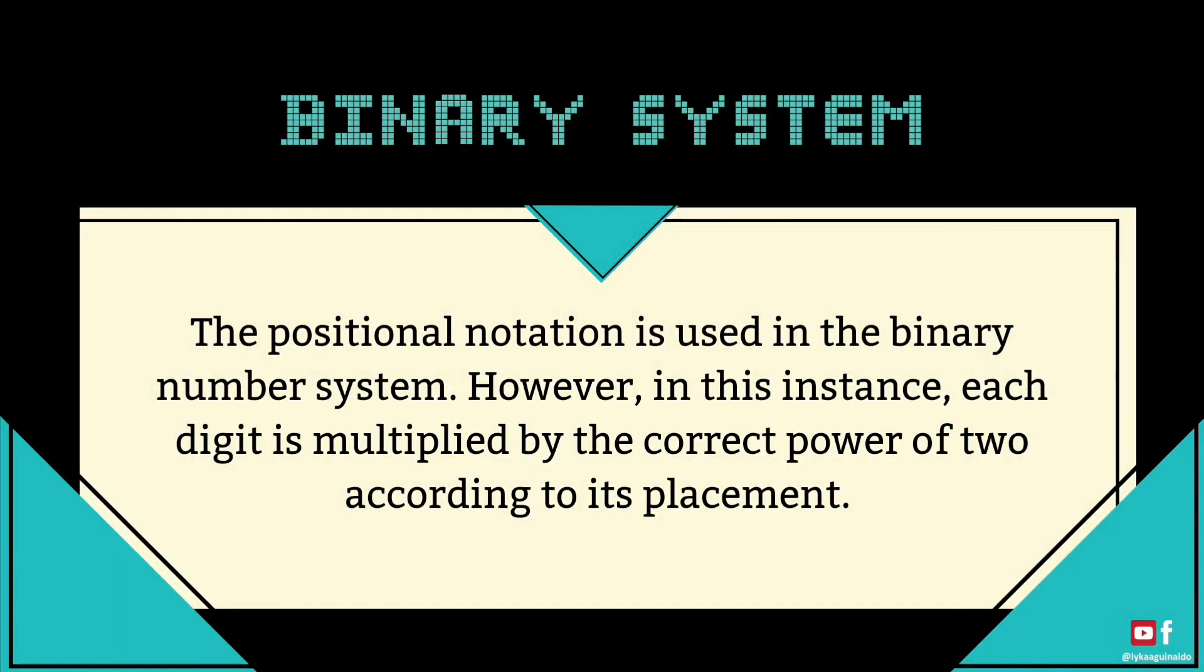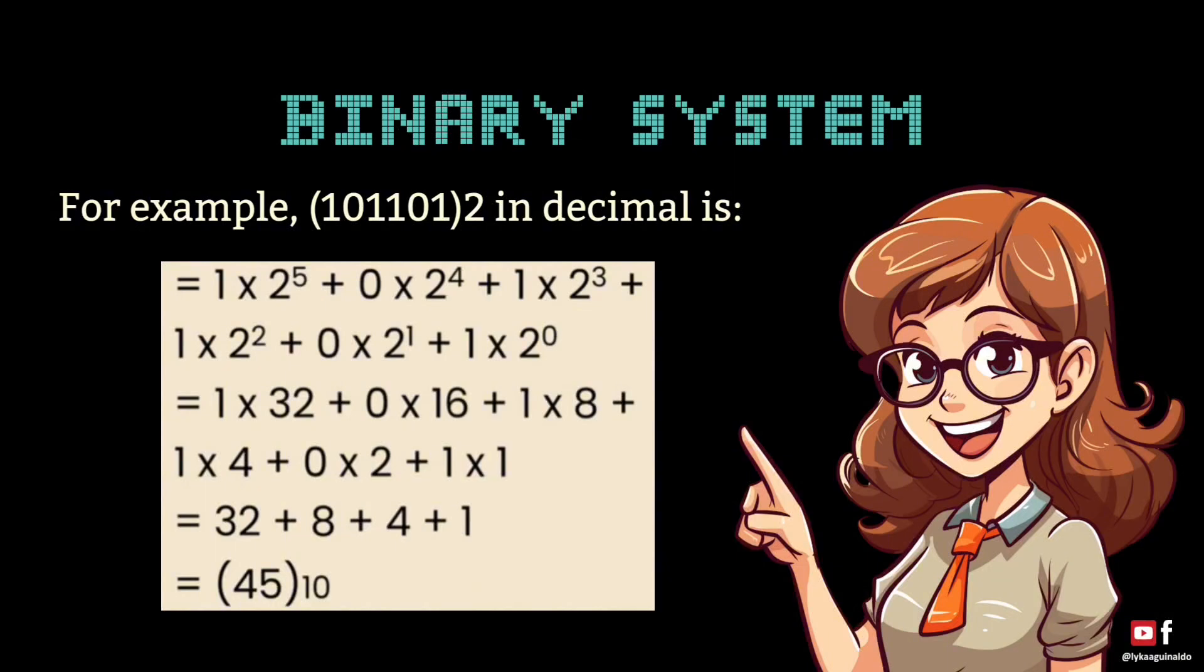The positional notation is used in the binary number system. However, in this instance, each digit is multiplied by the correct power of two according to its placement. Understand the equation.